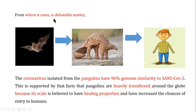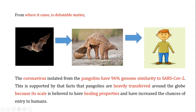The origin of COVID-19 is still a debatable matter, but the theory is that it transferred from bats to pangolins, and from pangolins to human beings. This theory is supported by the fact that coronaviruses isolated from pangolins have 96% genome similarity to COVID-19. Pangolins are heavily trafficked around the globe because of their scales, which are believed to have healing properties, and this has increased the chances of viral entry into humans.